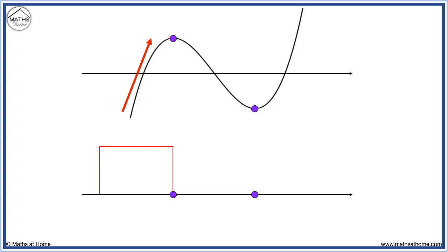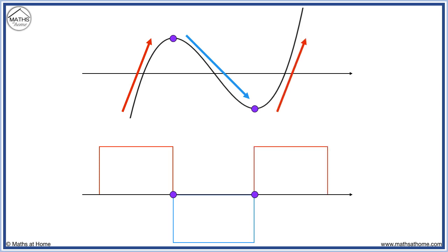Between these points, the graph is decreasing, so the derivative is below the axis between these points. Finally, we are increasing again, so we are above the axis. The derivative of a cubic will be a quadratic, so we will have a curved parabola between these regions.